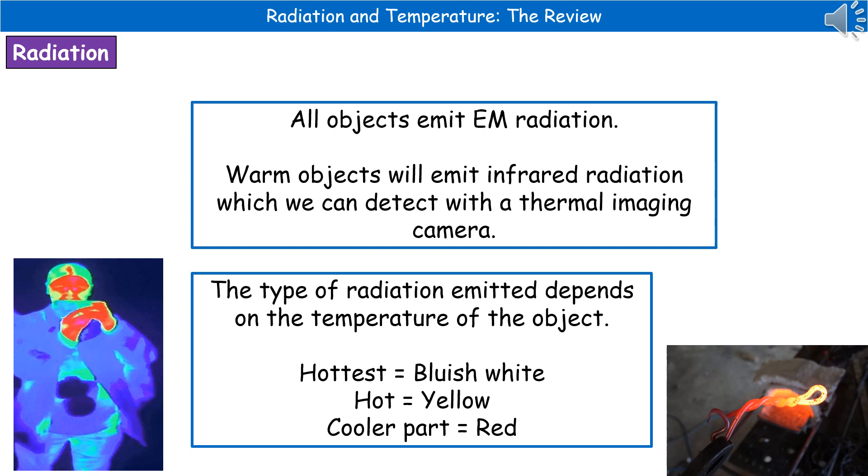When we're thinking about any warm object whatsoever, whether it be you, a cup of tea, a warm bath, anything at all that's warm, they all emit infrared radiation. Because any warm object is emitting infrared radiation, we can actually detect that by using a thermal imaging camera. You can see a picture of one of those in the bottom left.